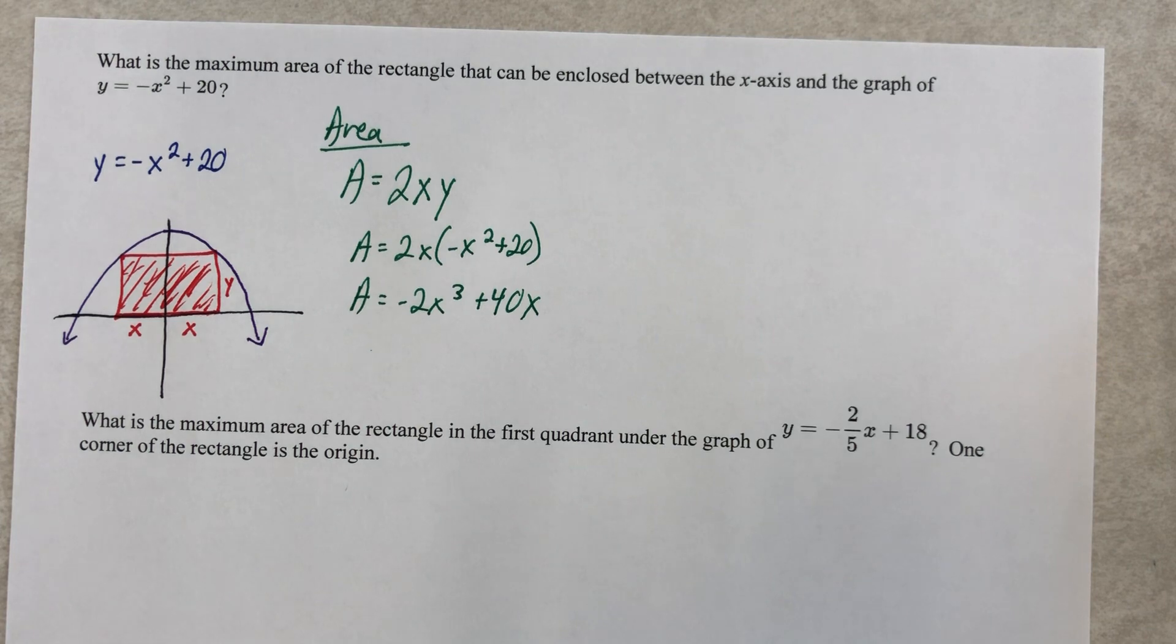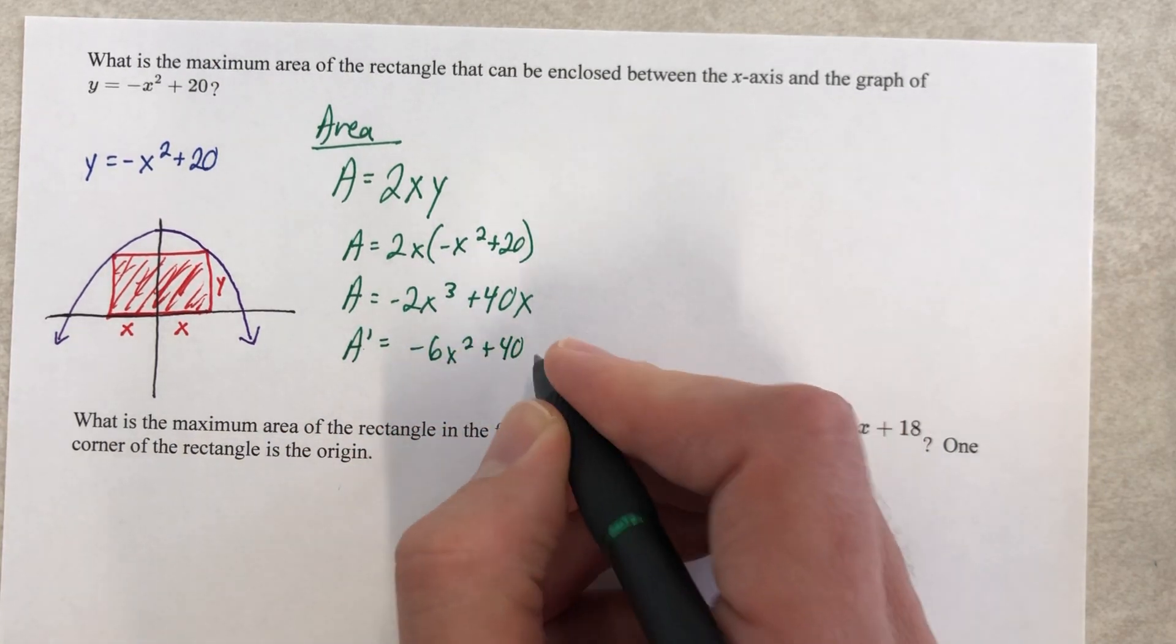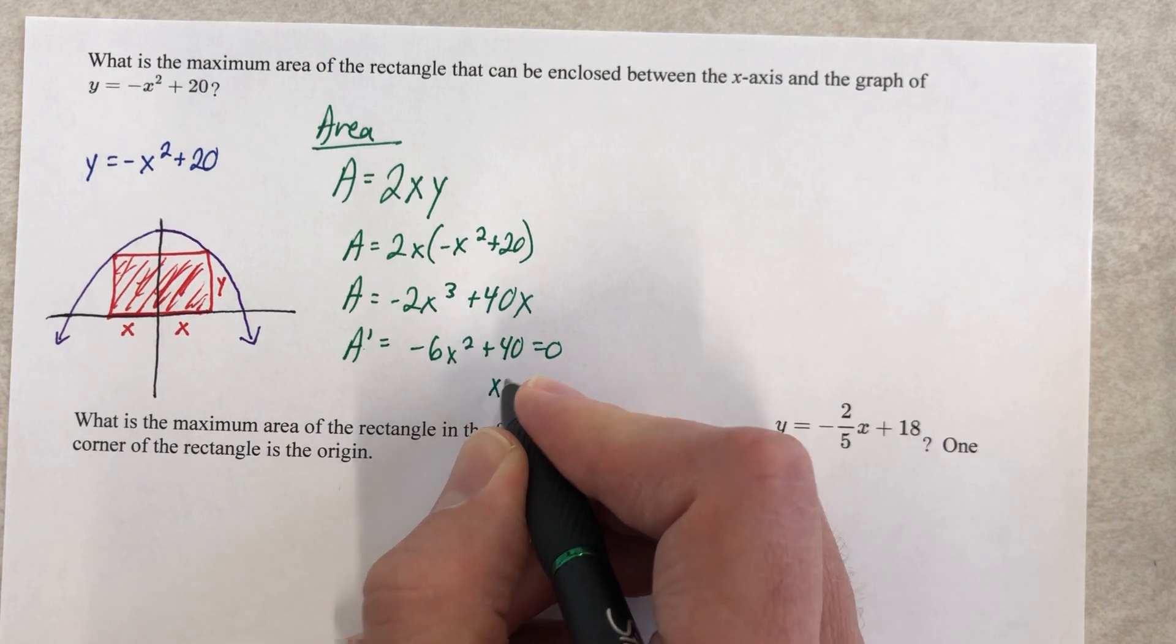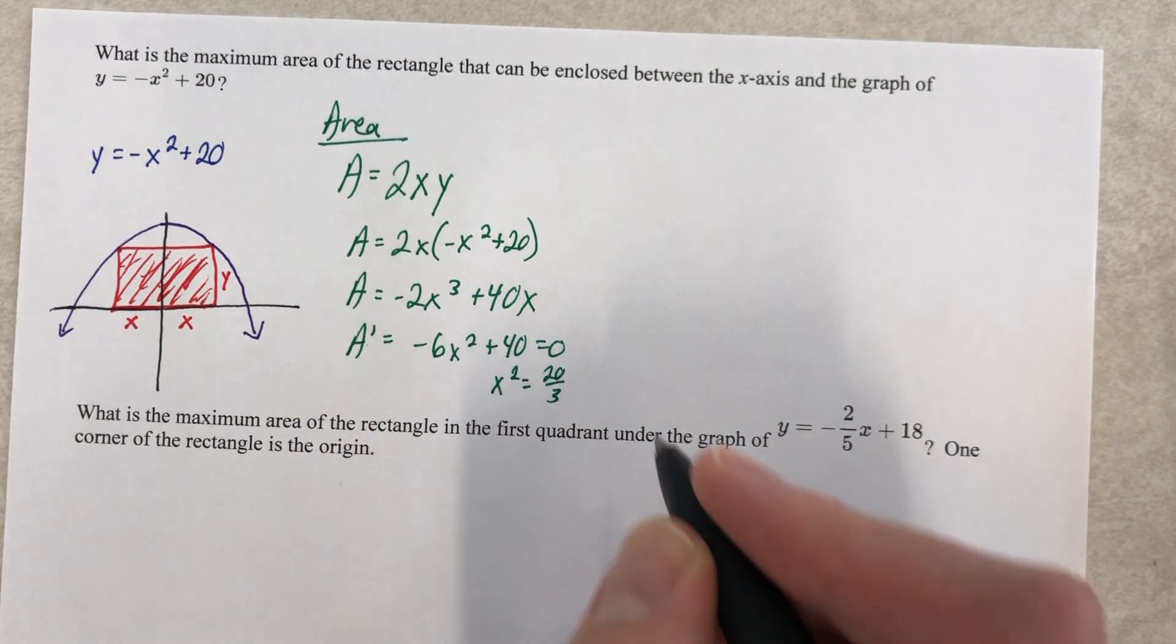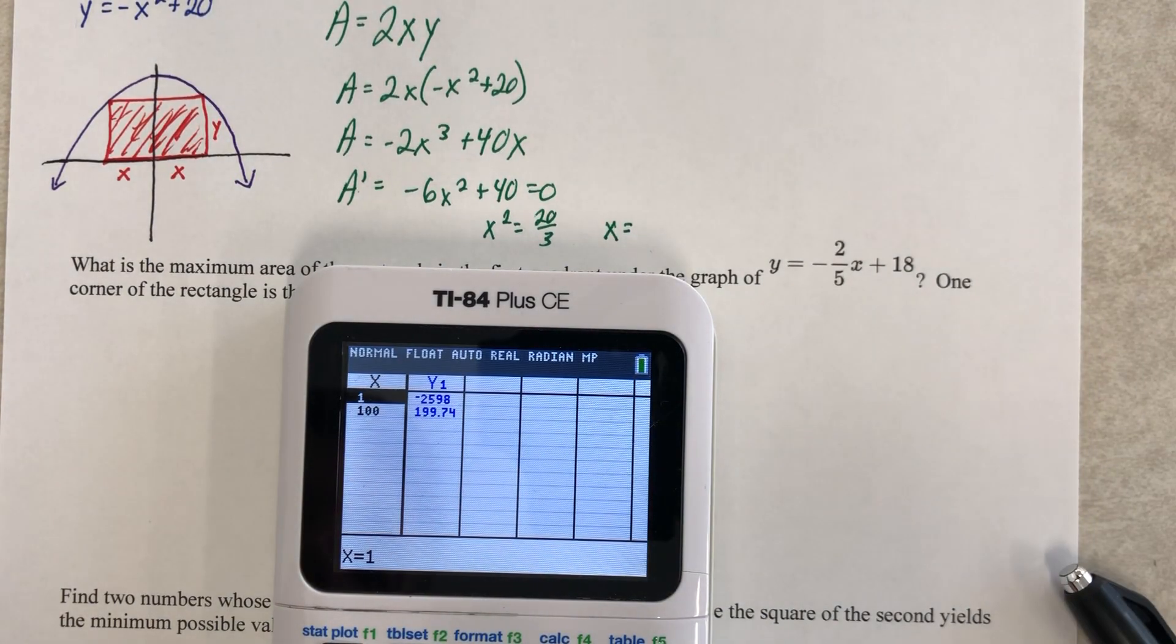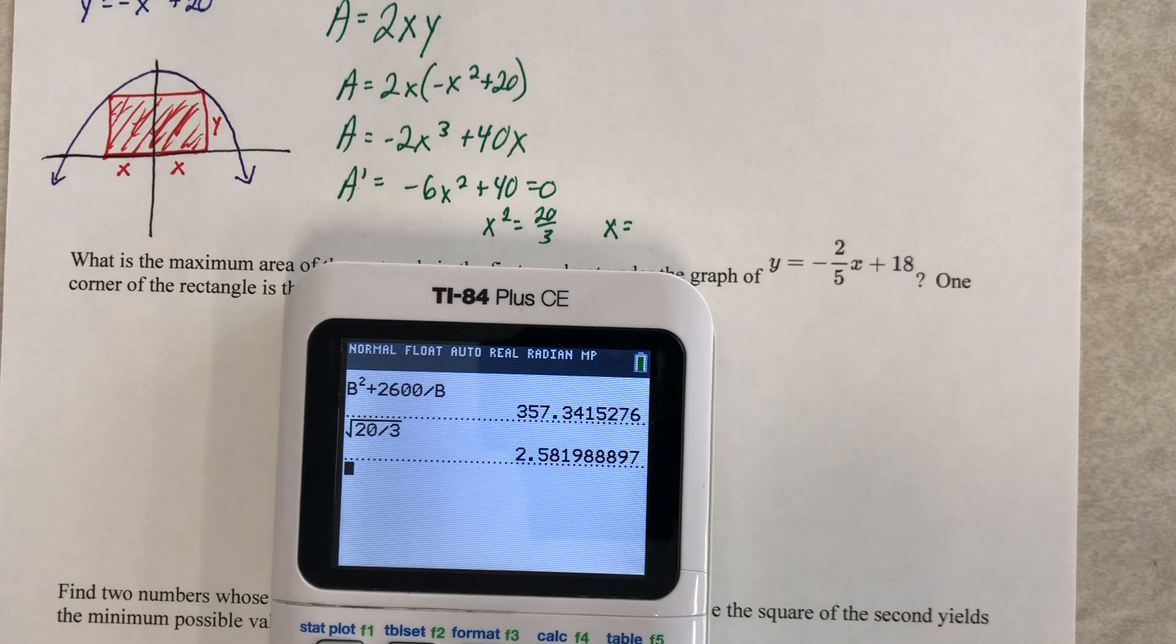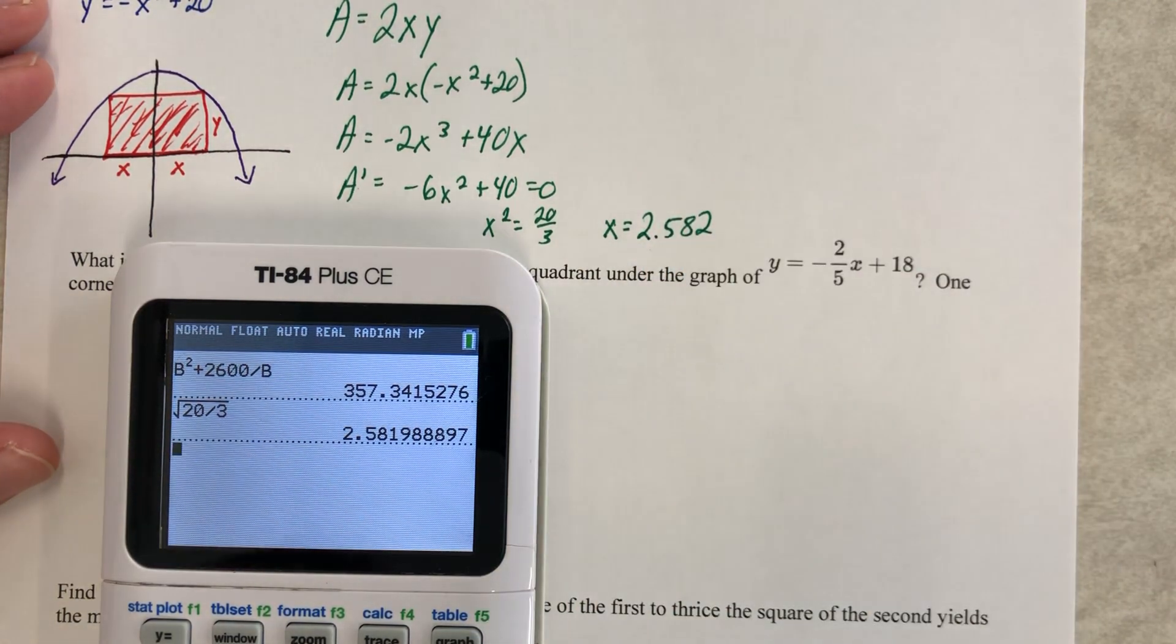And we are still looking to find the area that can be enclosed there. So what we're going to do is take the derivative of that. Negative 6x squared plus 40. We're going to set that equal to 0. And so let's see. x squared equals negative 40 over negative 6. So that would be 20/3. So x equals... I don't know why I'm saying that right now. But I am. It's fun. So 2.582. 2.582. There we go. We have an x value.